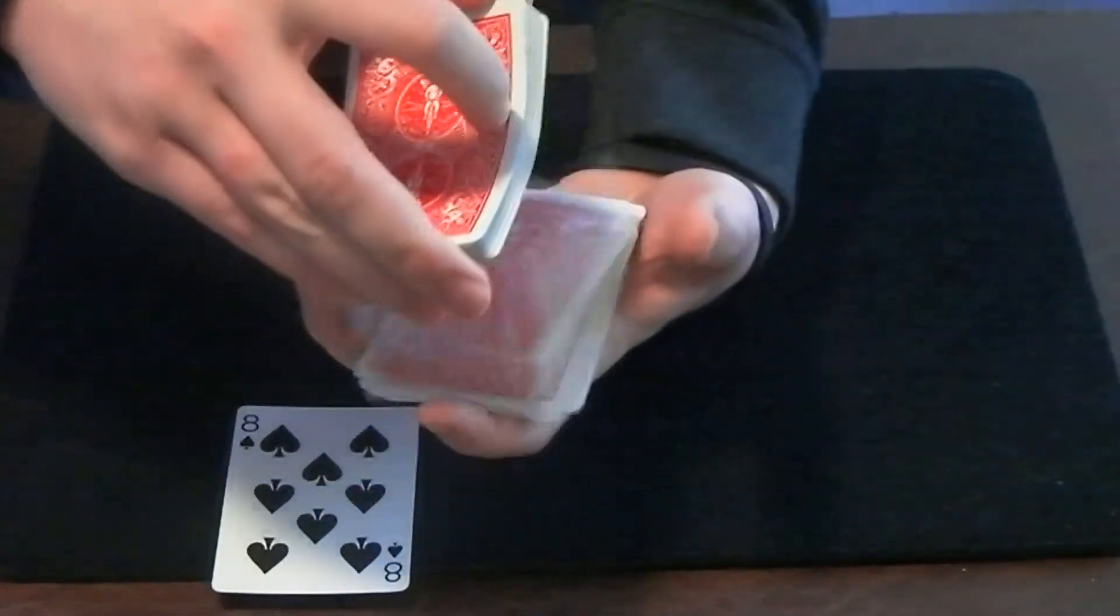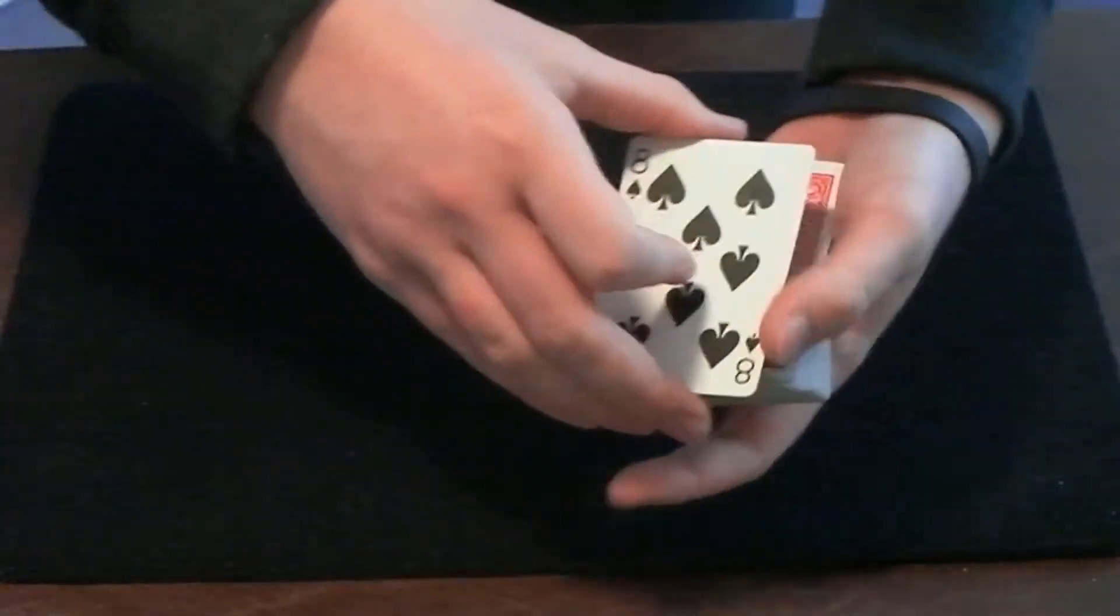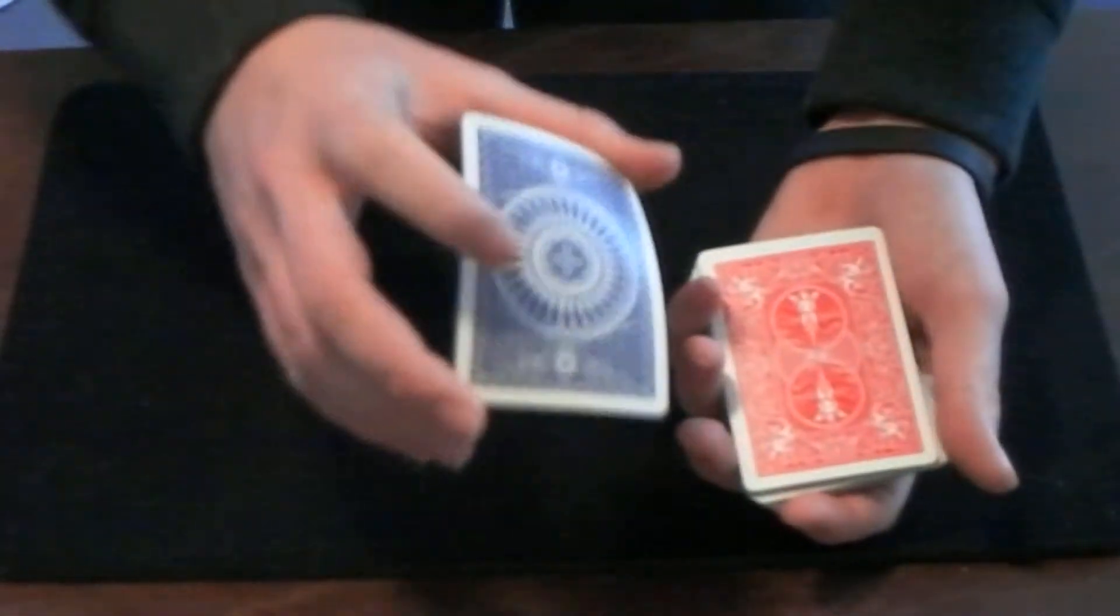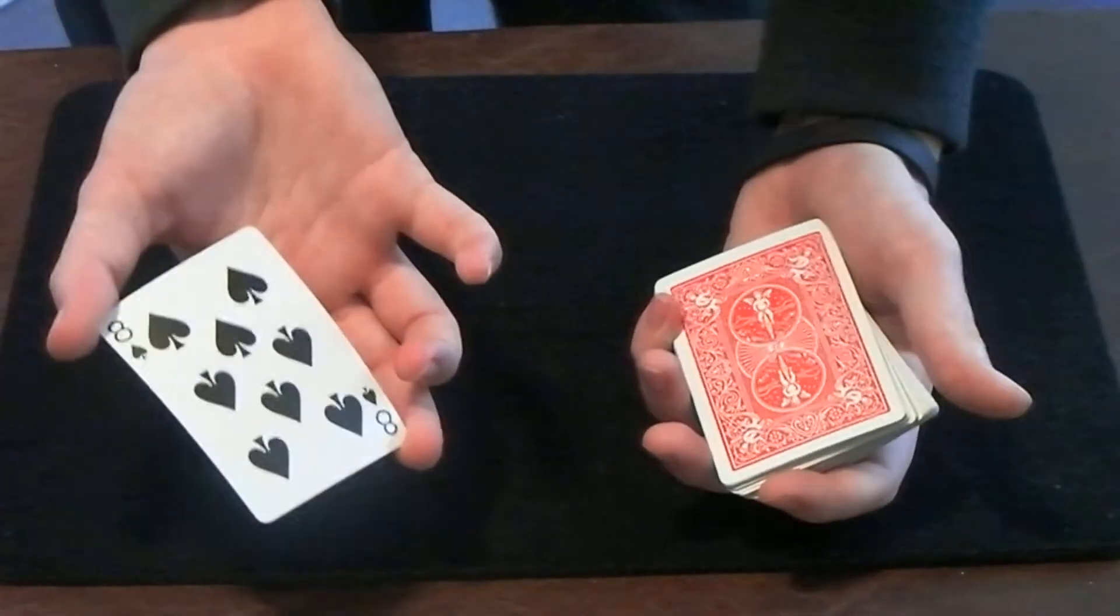Every last one is now bicycle back. And what's even crazier about this is if I just wave my hand over the eight, it becomes blue-backed in the tally-ho circle back, which I think is really awesome.